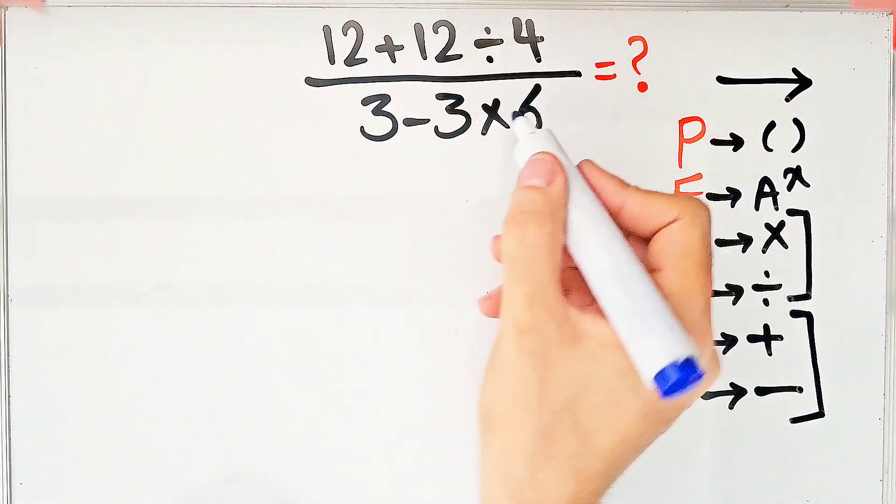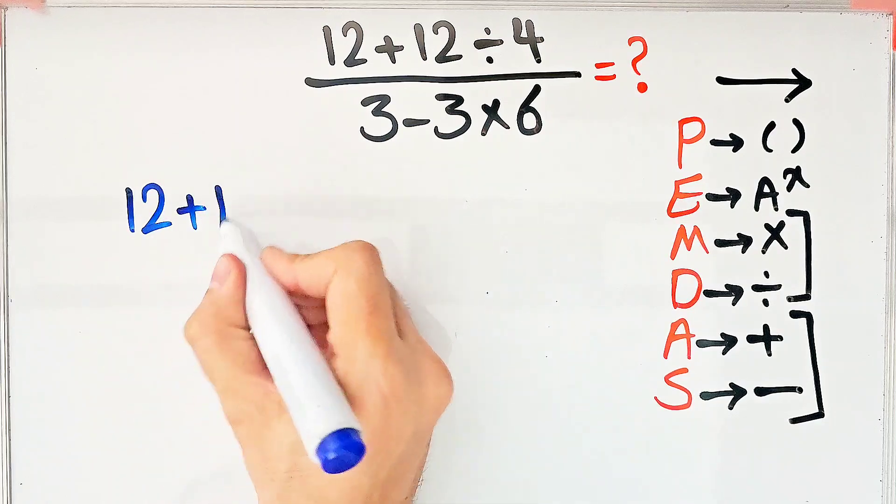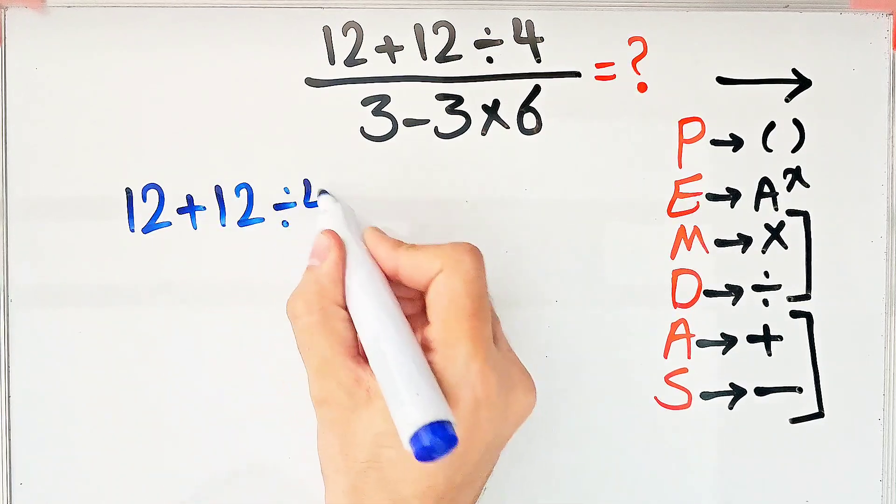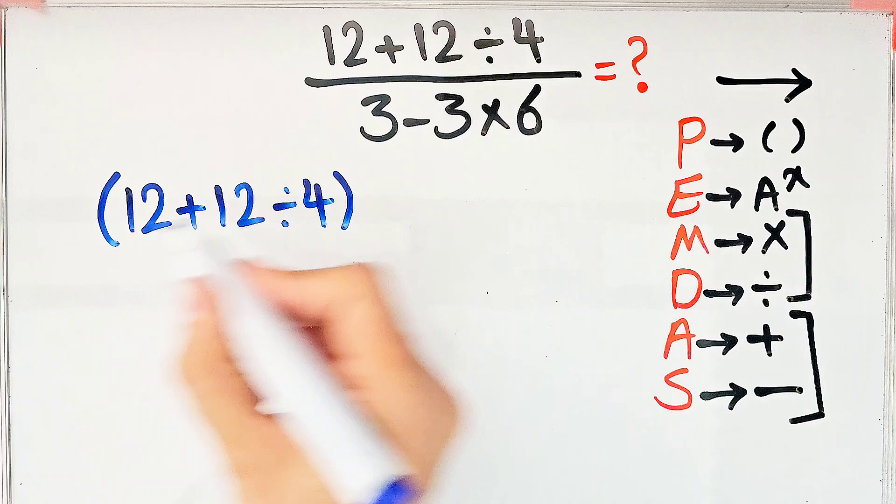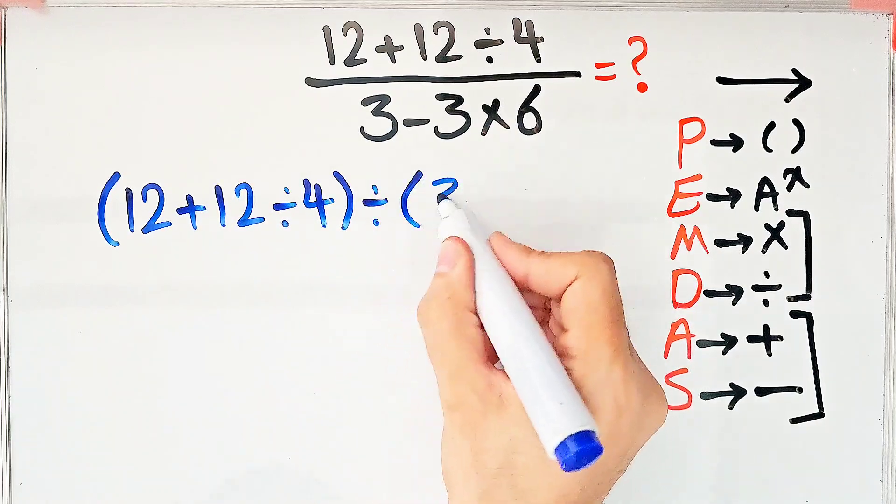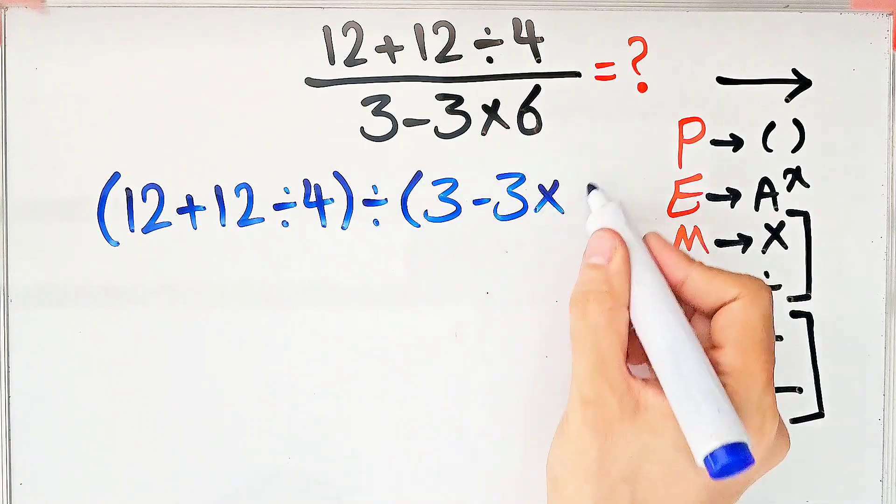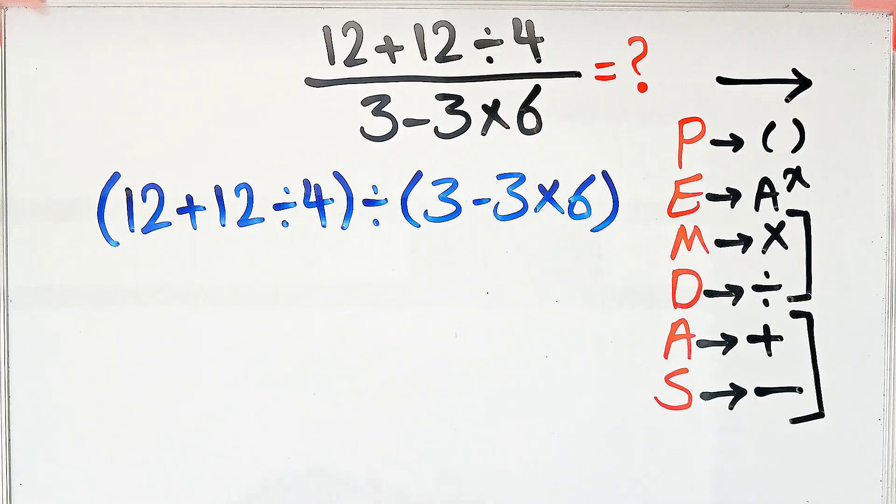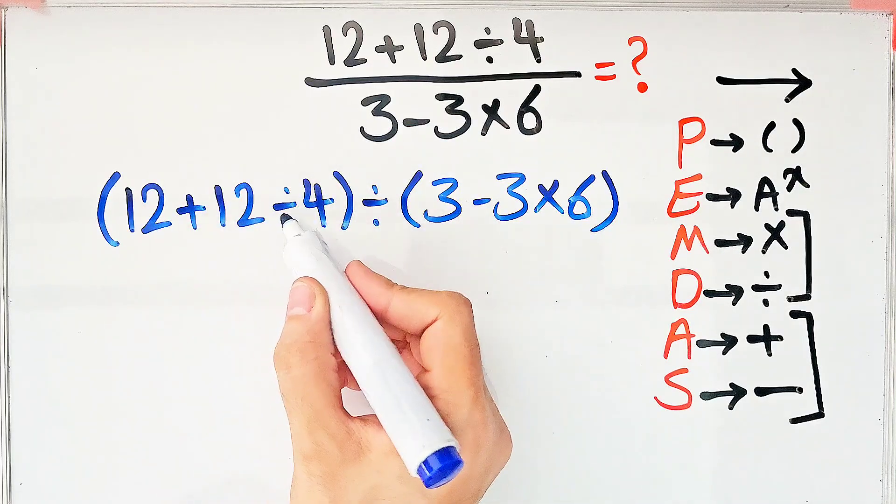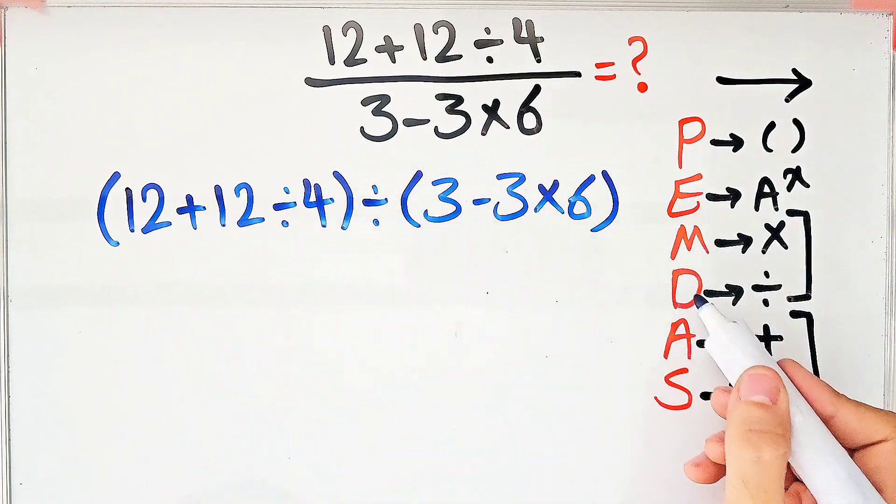First, we simplify this question. We have (12+12÷4) in the numerator, then divided by (3-3×6). According to the order of operations, first we simplify the parentheses. Inside the first parentheses, we have addition and division.